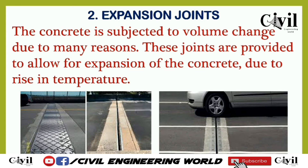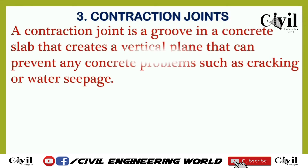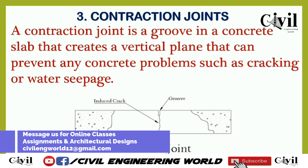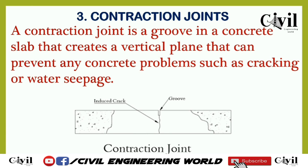The third kind of joint provided during construction is the contraction joint. A contraction joint is a pre-planned joint that provides a vertical plane to prevent concrete problems such as cracking or water seepage. It is also called pre-planned cracking, because we anticipate that a weak location in the concrete region will be vulnerable due to different loads and pressure. We already make a groove or induce a crack in the structure to increase its lifetime.